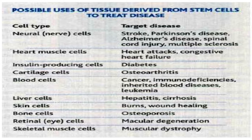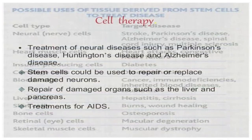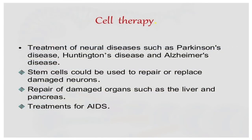In possible uses, neuronal cells can be used for stroke, Parkinson's disease, and Alzheimer's disease. Other applications include heart muscle repair, insulin-producing cells for diabetes, liver cells, skin cells, bone cells, and retinal cells. In these types of diseases, we can use cell therapy.